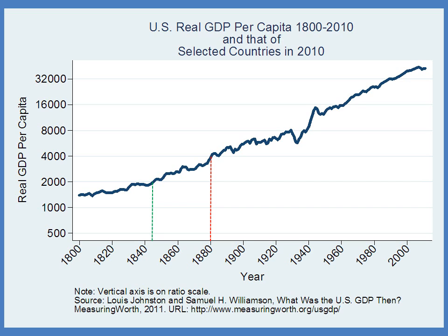We can also see that the growth rate in the United States has been about 2% per year for about 200 years, with some obvious exceptions. This here is the Great Depression, for example — marked even larger than the Great Recession we've had more recently, much larger than that.